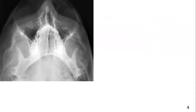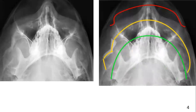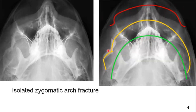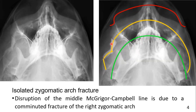Here in this radiograph of the occipitomental view, you can appreciate the fracture of the zygomatic bone if you follow the Campbell's lines, as previously described in the video. Here you can see the Campbell's lines. If you recall your knowledge of Campbell's lines, you will not find any fracture on the first and third lines. In the middle one, you will find a zygomatic arch fracture.